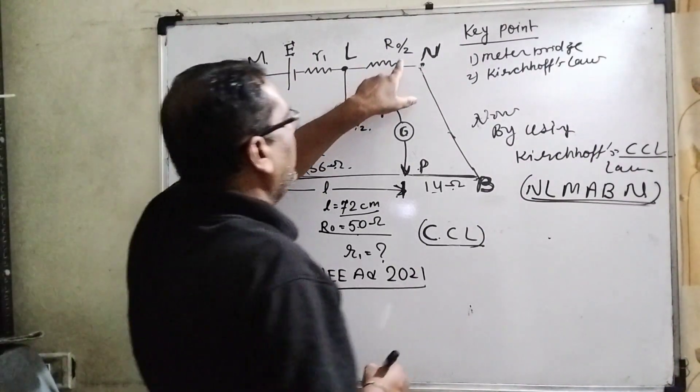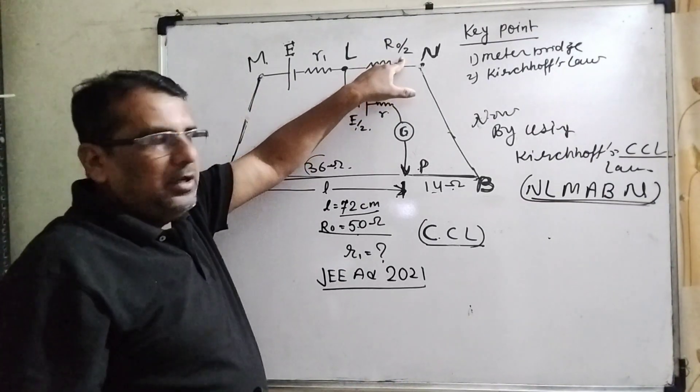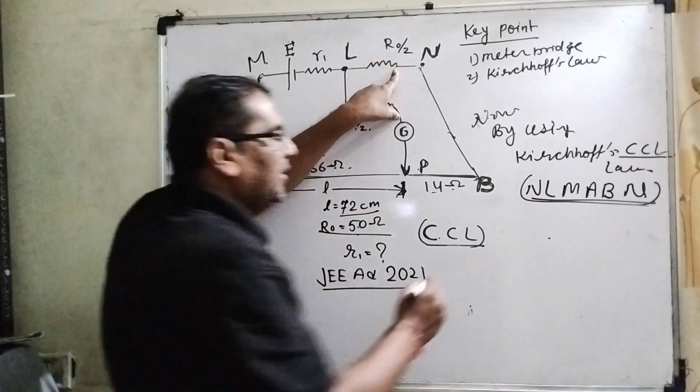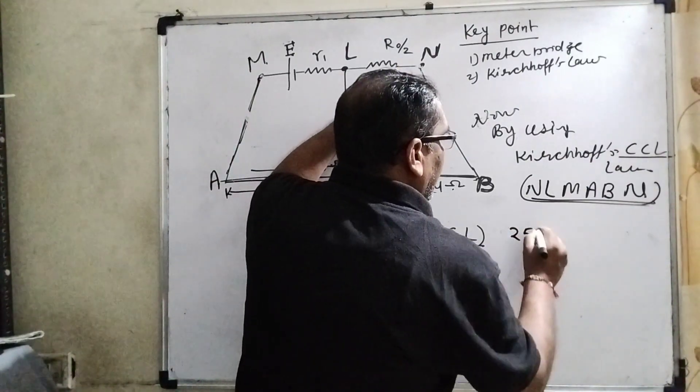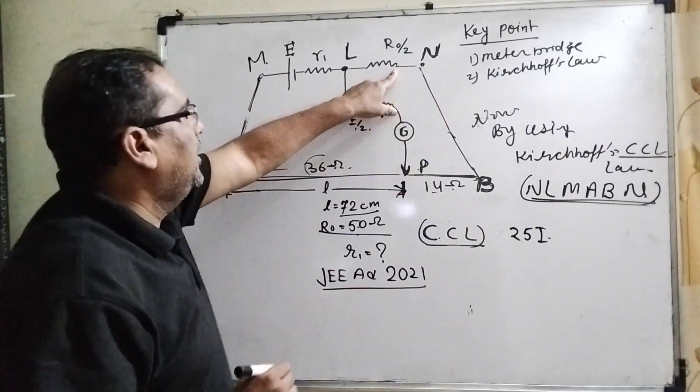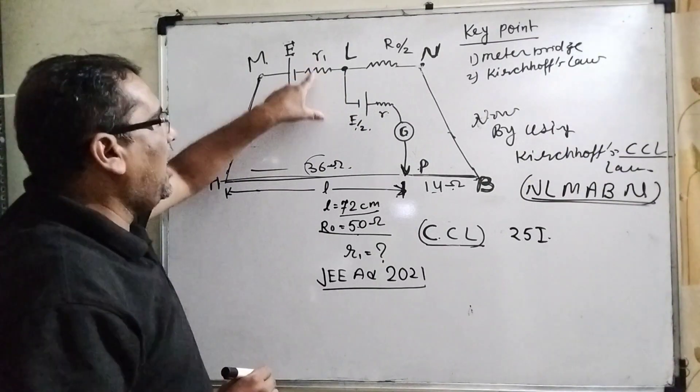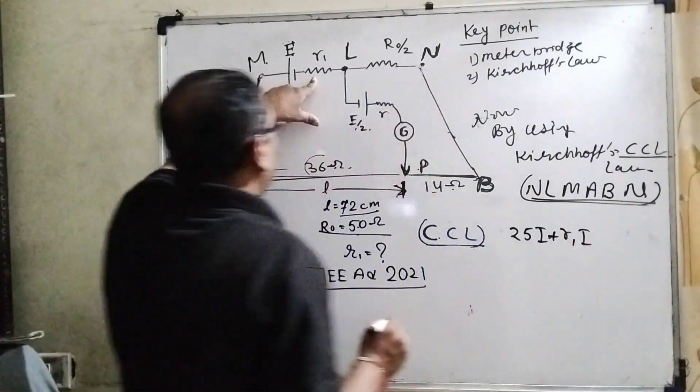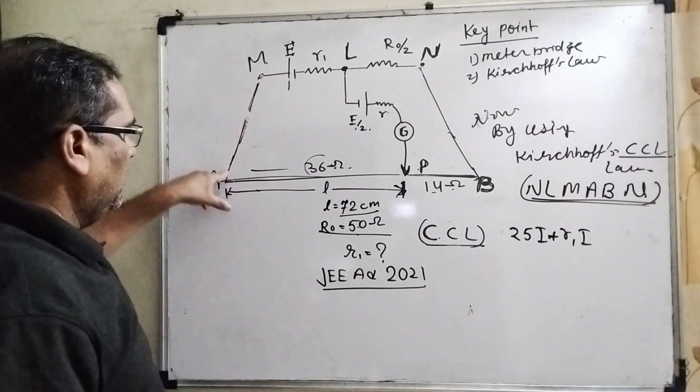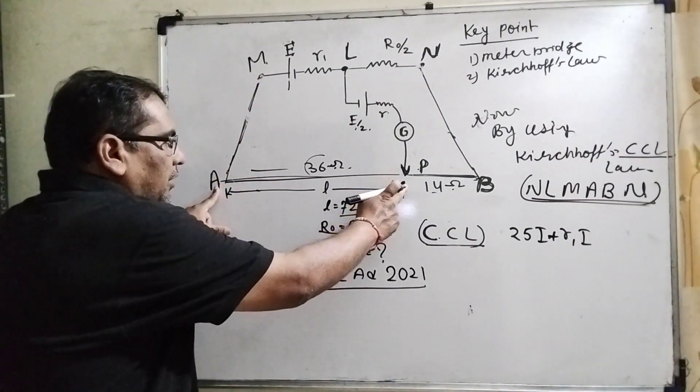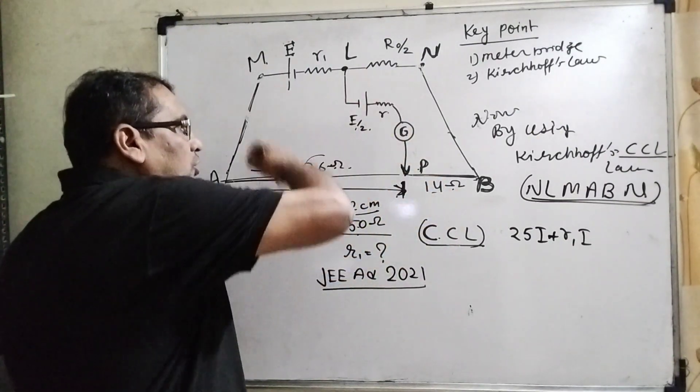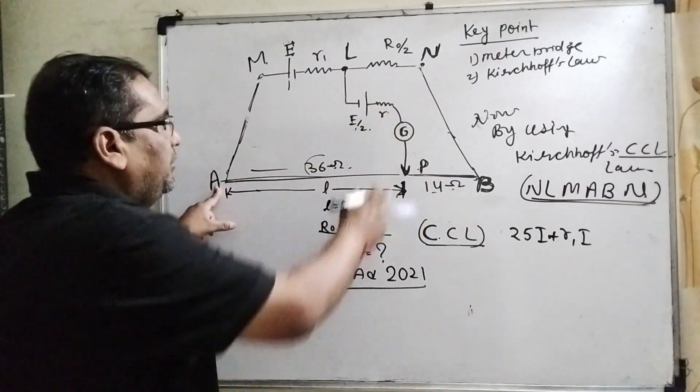So starting from here, R0 by 2. Here R0 is given as 50, and its half means 25. Then 25I. Now go further, here R1 plus R1 and I.